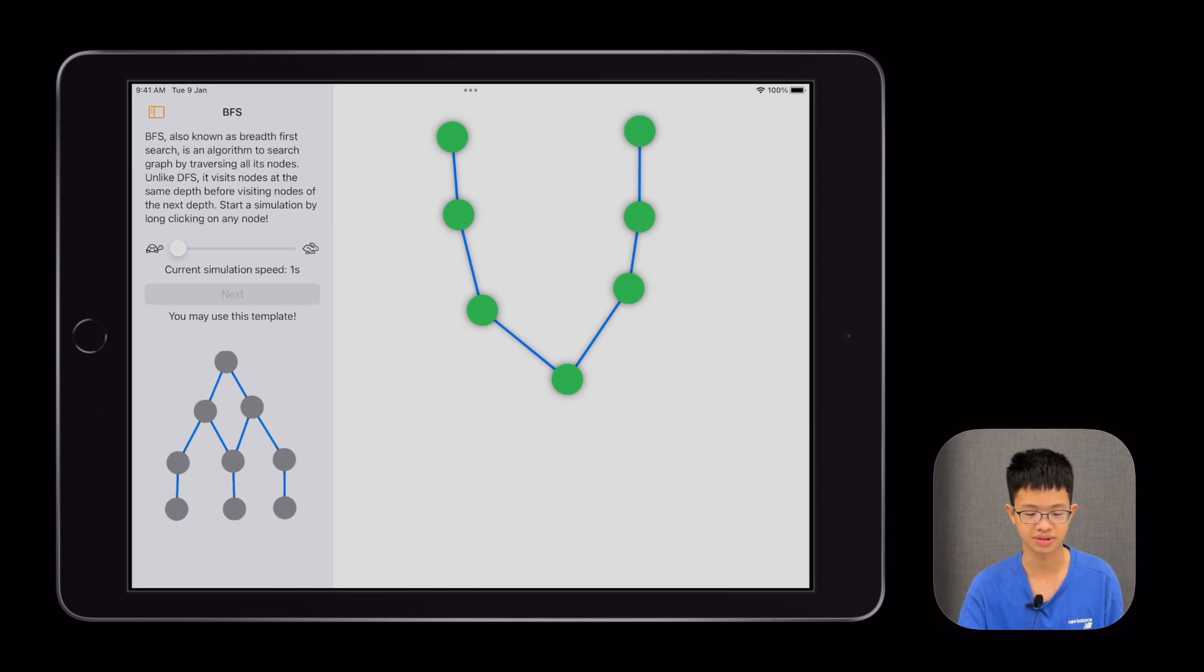I also have BFS, which is breadth-first search. It traverses all the nodes in one layer before going to the next layer. You can see that there is a difference.